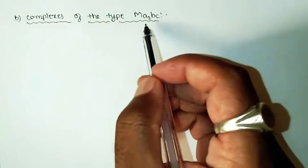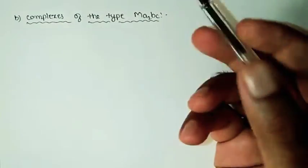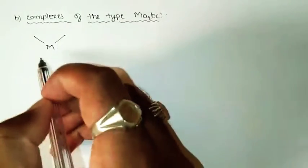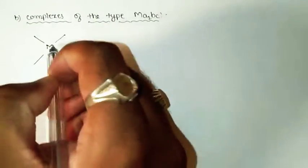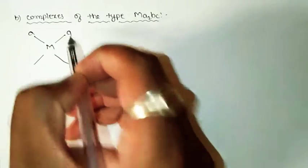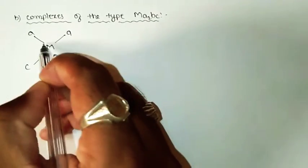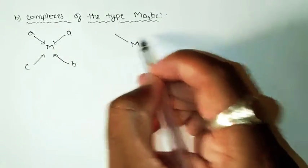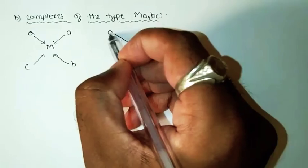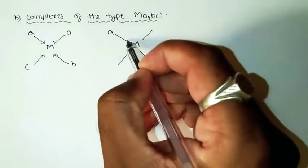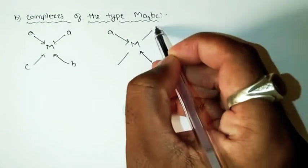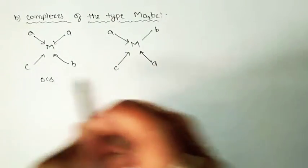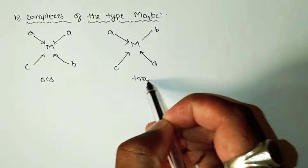For square planar complexes of the type MA₂BC, cis and trans isomerism can also be observed. In the cis configuration, the two identical A ligands are at adjacent positions, with B and C on the remaining sites. In the trans configuration, the two A ligands are at exactly opposite positions, with B and C adjacent to each other.